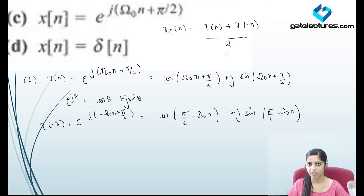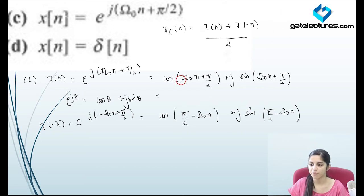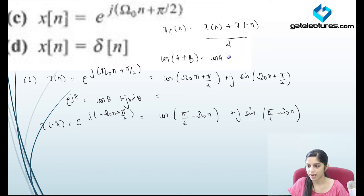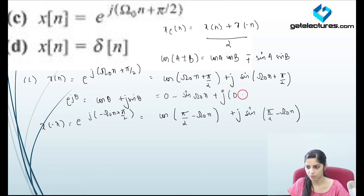Using the cosine identity cos(A plus B) equals cos A cos B minus sin A sin B, and knowing that cos(pi/2) equals 0 and sin(pi/2) equals 1, we can simplify. So x(minus n) simplifies. If I calculate the even part of the signal — adding x(n) and x(minus n) — the cos part gets cancelled, and we obtain 2j*sin(omega_0 n) divided by 2, which makes the even part j*sin(omega_0 n). For the odd part, subtracting gives minus 2*sin(omega_0 n) divided by 2, which makes the odd part minus sin(omega_0 n).